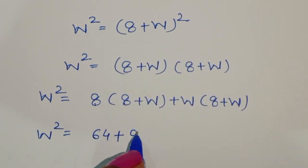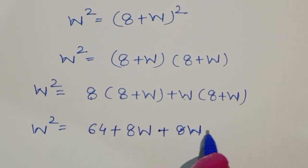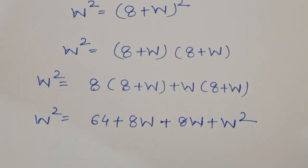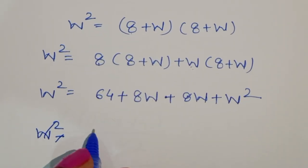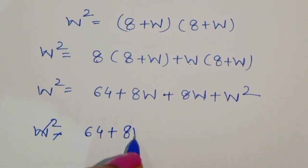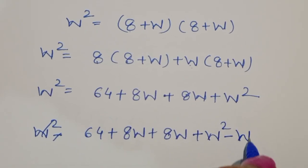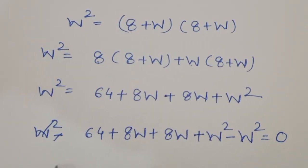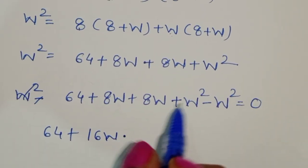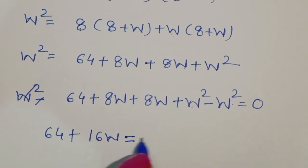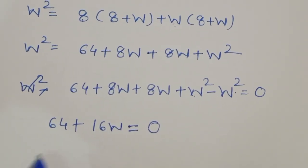Continuing the expansion: w = 64 + 8w + 8w + w². Rearranging, we get 64 + 16w + w² minus w = 0. The w² terms cancel, leaving us with 64 + 16w = 0.